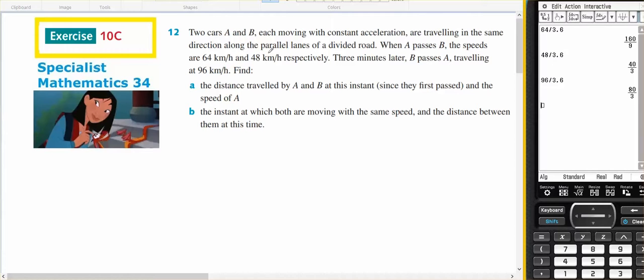They can't run into each other. When A passes B, the speeds are 64 and 48 kilometers per hour, respectively.